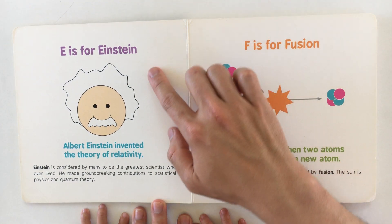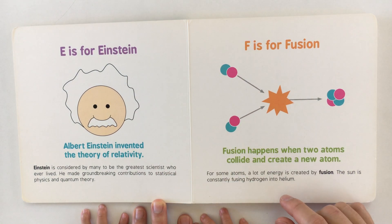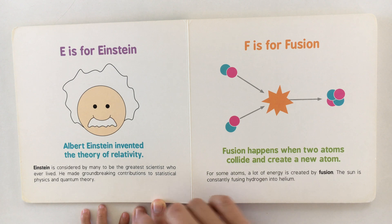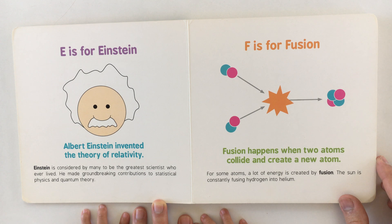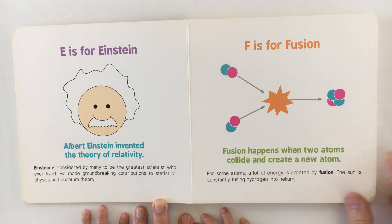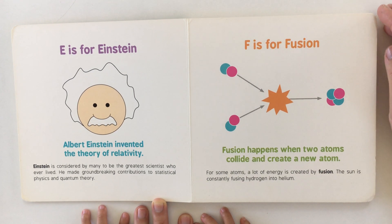E is for Einstein. Albert Einstein invented the theory of relativity. Einstein is considered by many to be the greatest scientist who ever lived. He made groundbreaking contributions to statistical physics and quantum theory.